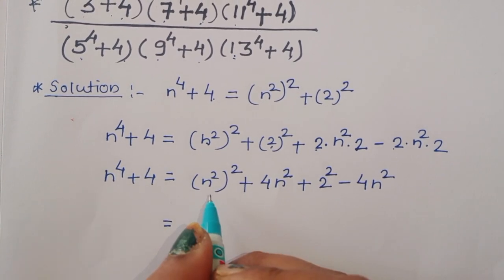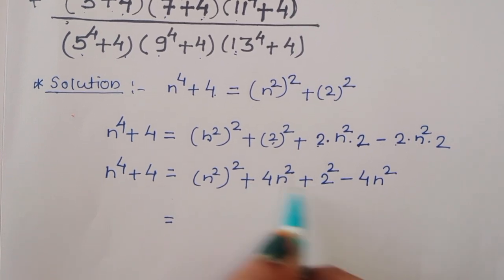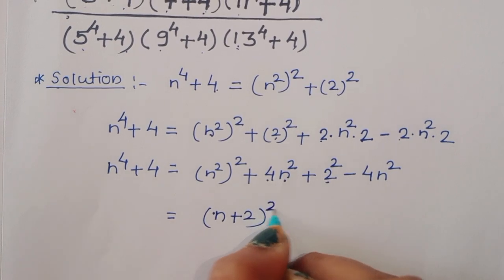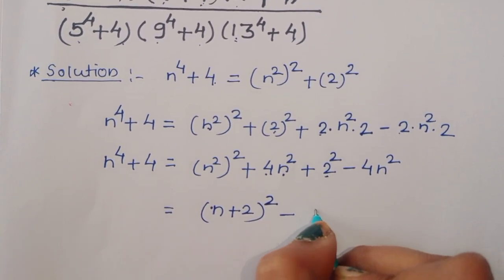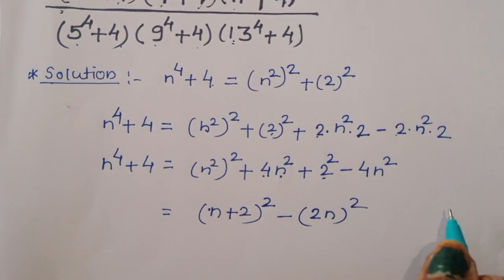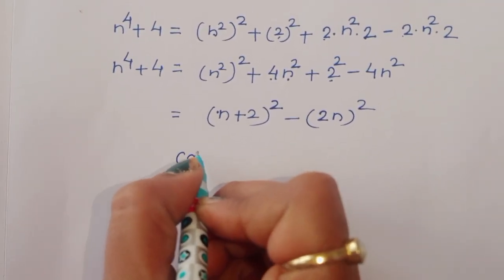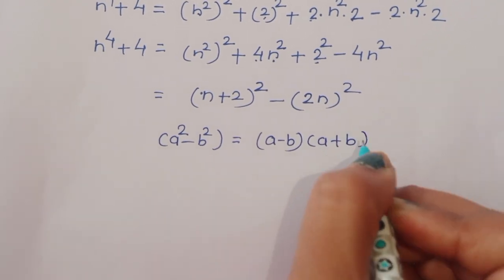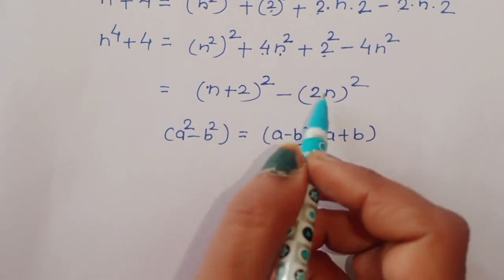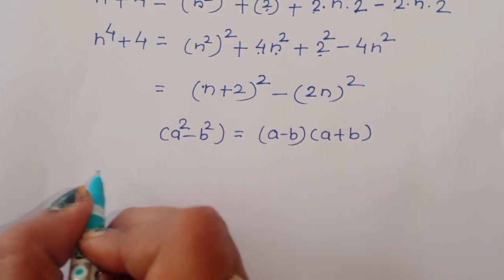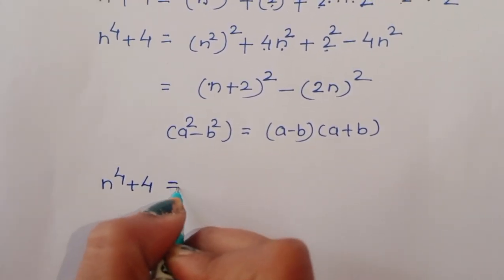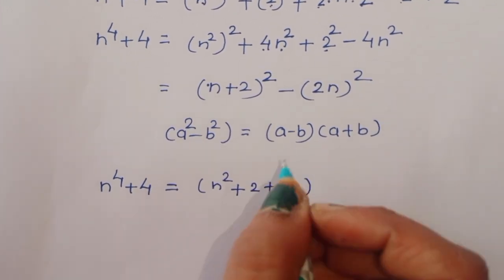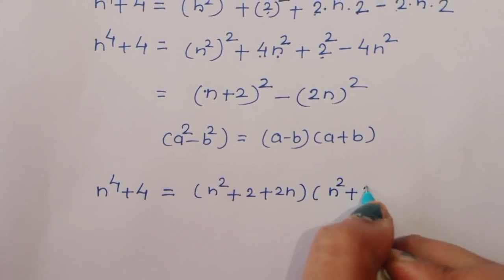This becomes a square plus b square plus 2ab, which we can write as n square plus 2, whole square, minus 2n, whole square. Now using the formula a square minus b square equals a minus b times a plus b, we can write: n power 4 plus 4 equals n square plus 2 plus 2n, times n square plus 2 minus 2n.